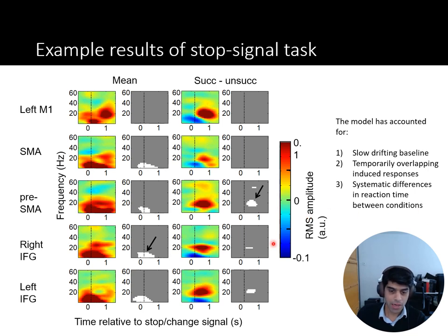So we did that with the stop signal task, and here are some results that we found looking at M1, supplementary motor area, and the pre-supplementary motor area next to it on the middle wall, and the right and left inferior frontal gyrus, which are all areas that are thought to be involved in stopping. You can see that if we just look at the averages of the stop signal in any condition, there's a low frequency response across all these areas in the middle wall and the right and left IFG, which is quite early on and locked to the presence of the stop signal. And here, remember, we've removed or adjusted for linear confounds related to other stimuli.